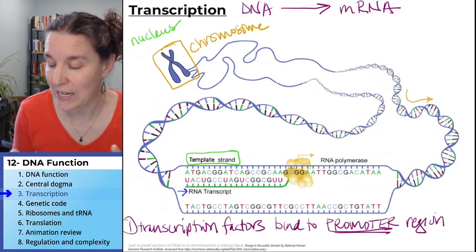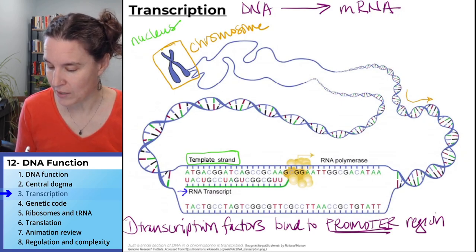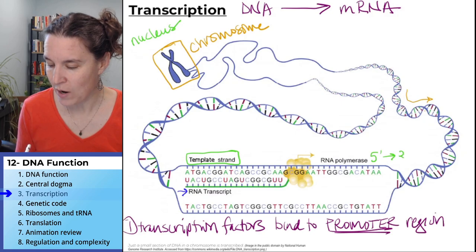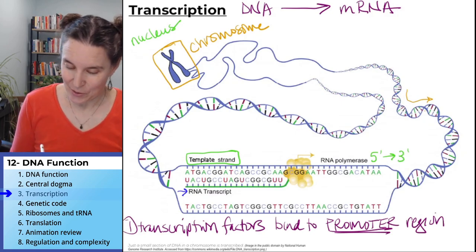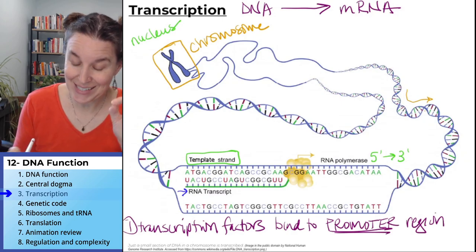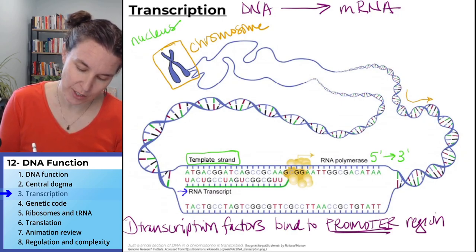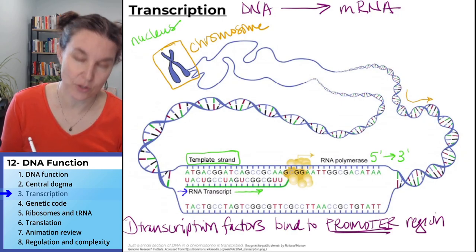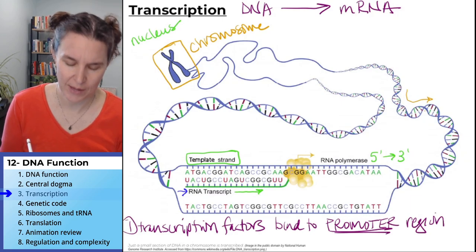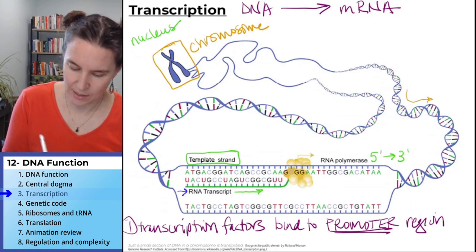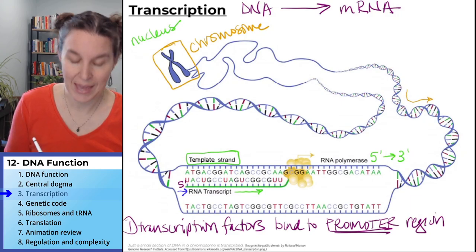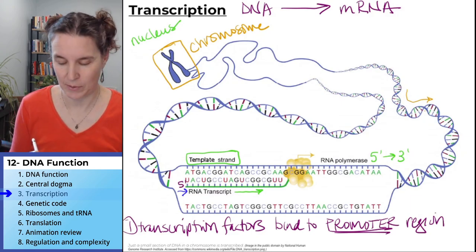Just like DNA polymerase, RNA polymerase can only build new molecules in the five prime to three prime direction. That tells you that this direction — because we're building in this direction — this has to be the five prime end of my template.